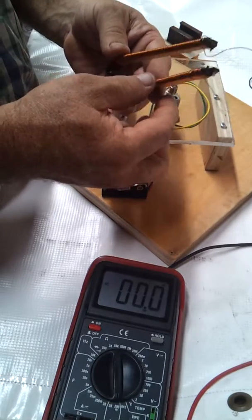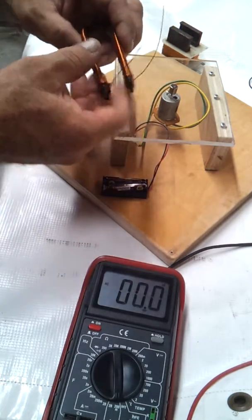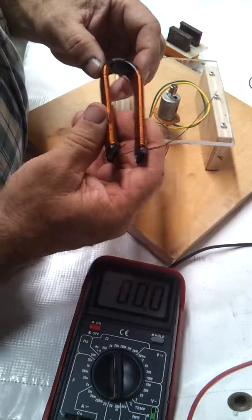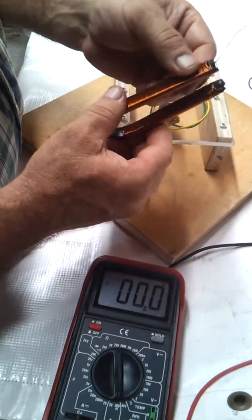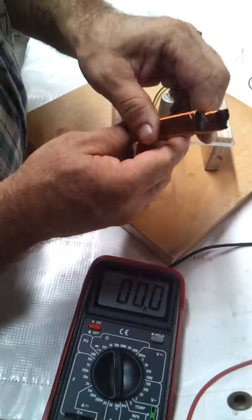which is one layer of number 24 magnet wire. I got about probably a half a watt out of it, which I think is a lot considering what little amount of wire that's on here.